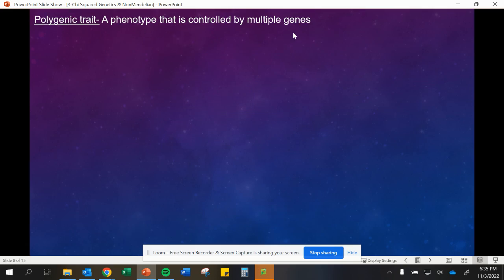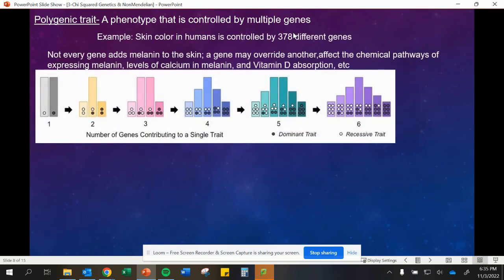This is where we have a phenotype that's controlled by multiple genes. In this case, we have more than one gene affecting it. An example of this is skin color. Skin color is actually controlled by 378 different genes, which is why we don't have just two options. We have a wide variety of options and differences in skin tone. It's looking at adding all of those genes together. What is inherited contributes to the melanin that's produced in those skin cells.